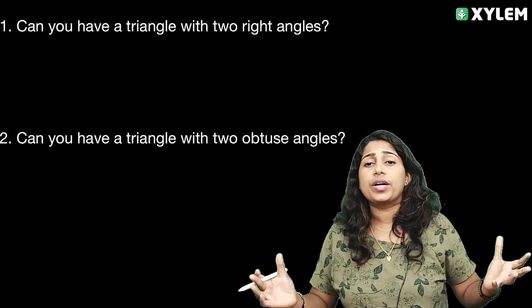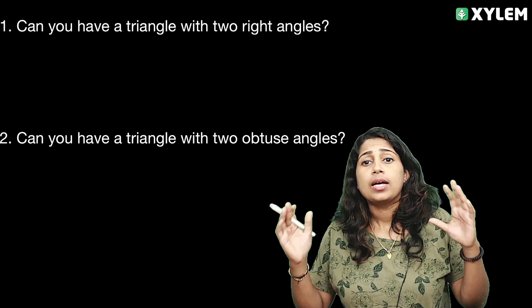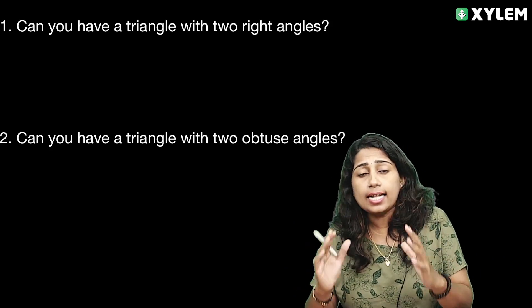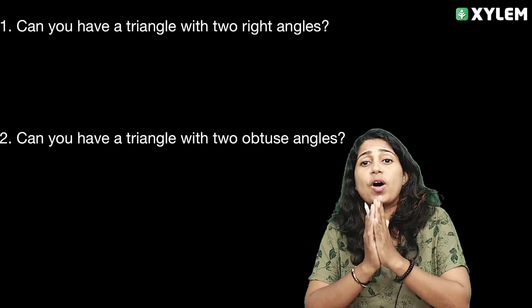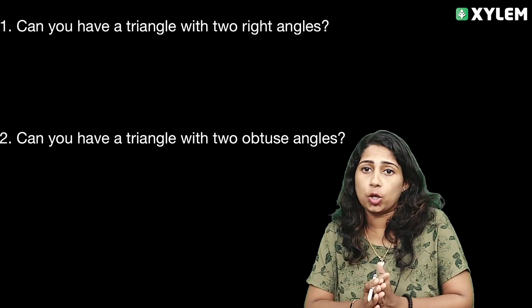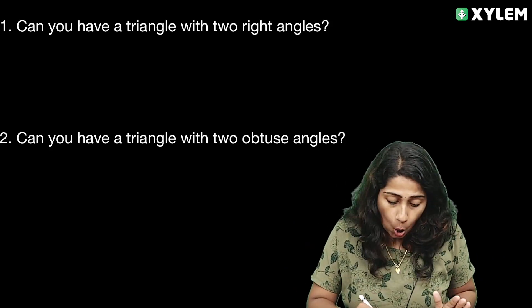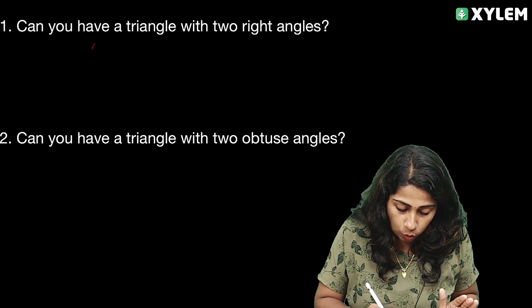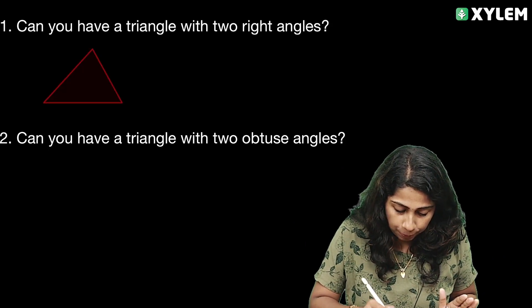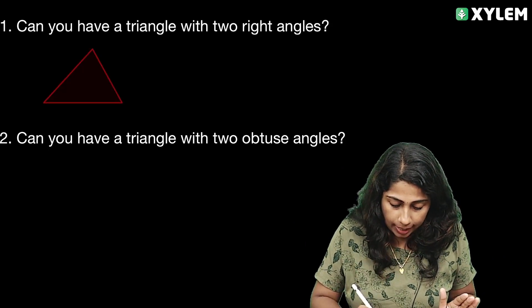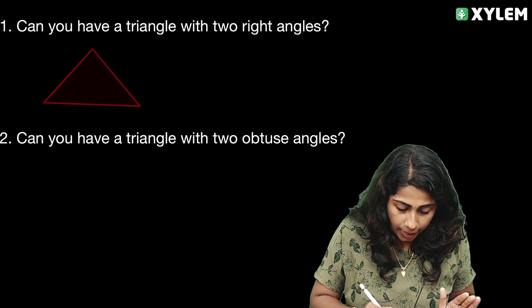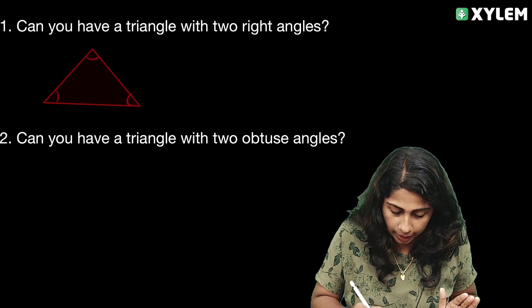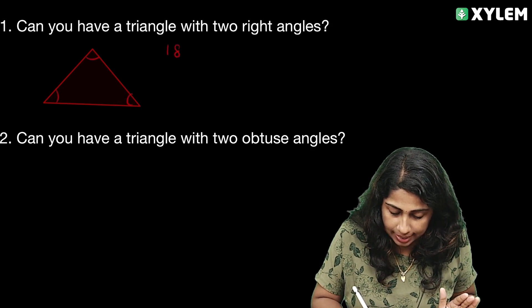What does the Angle Sum Property mean? It is a theorem about triangles. In any triangle, there are three angles, and all three angles together are equal to 180 degrees.